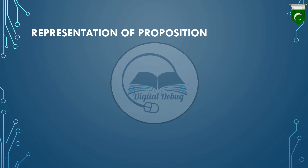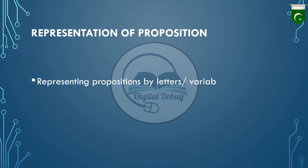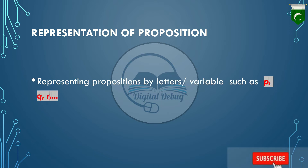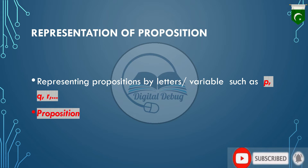When we talk about propositions, they can have different lengths — some are very small statements and some are long. We denote our propositions with different variables or letters, and as a result, we call them propositional variables.